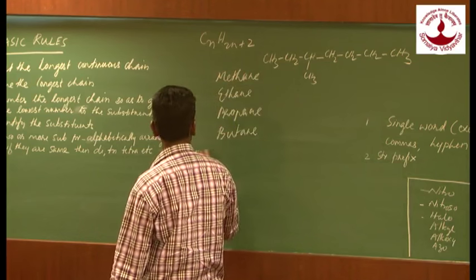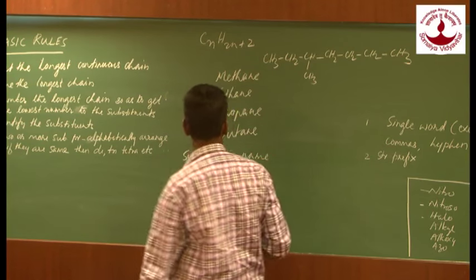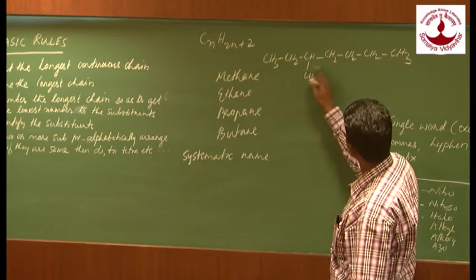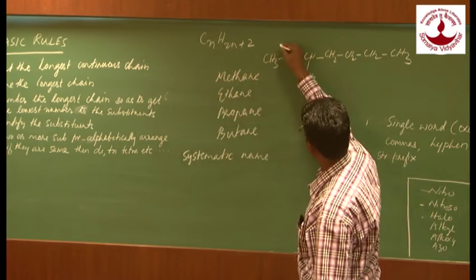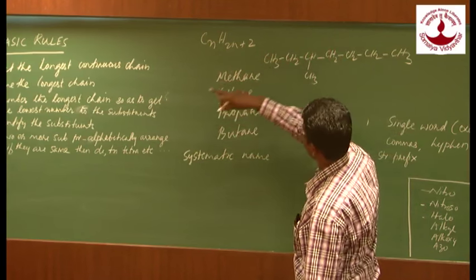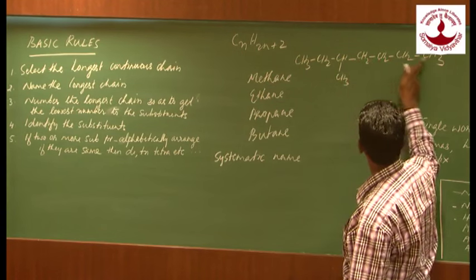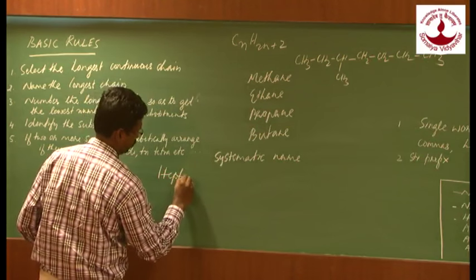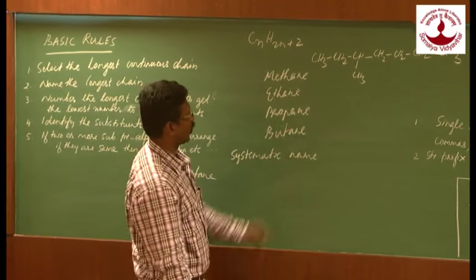We call it systematic nomenclature or systematic naming. Let us see this compound. How many carbons are there? We have to find the longest continuous chain. Suppose I count: 1, 2, 3, 4, 5, 6, 7 — so the longest chain is 7 carbons, which is heptane. So the first rule is: select the longest continuous chain and name it. Here it is heptane — 7 carbons.